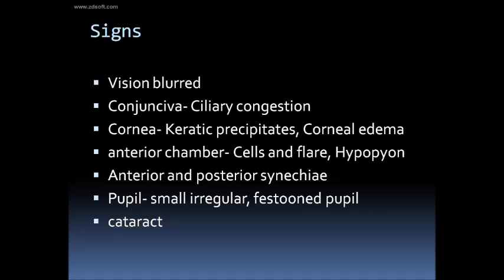Posterior synechiae are adhesions between the posterior surface of the iris and the anterior surface of the lens. These synechiae can lead to glaucoma by interfering with aqueous drainage, or to cataract formation by impairing lens metabolism. The pupil becomes small and irregular.